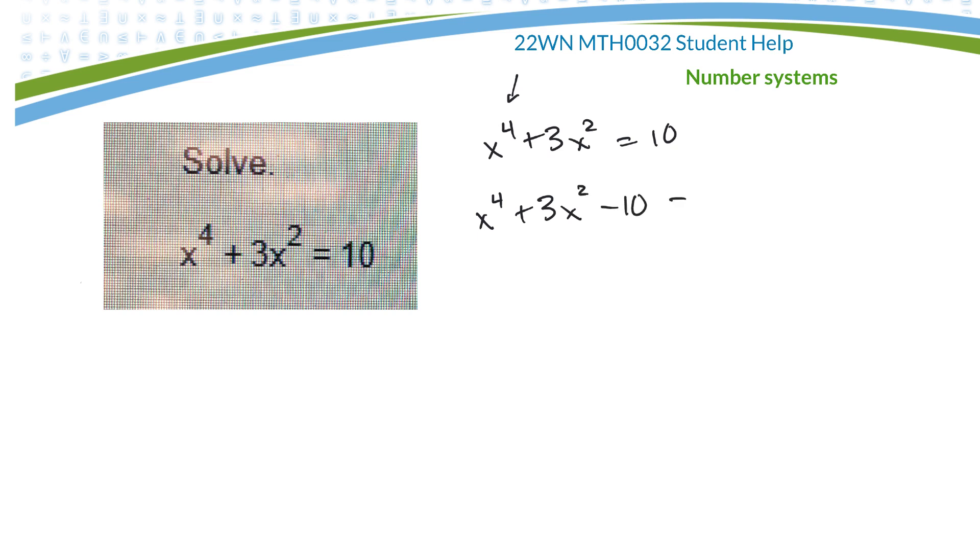So let's bring the 10 over and make it minus. And then I'm going to just try and factor it. I'll split the x to the fourth up into x squared and x squared. And then the 10 will be 5 and 2. So probably a plus 5 and a minus 2. I think that's right. It's equal to 0.